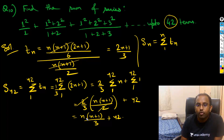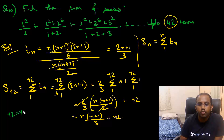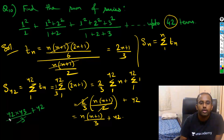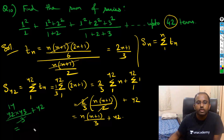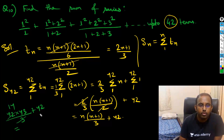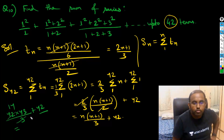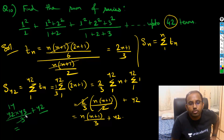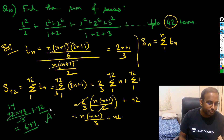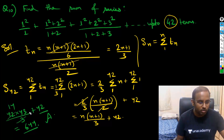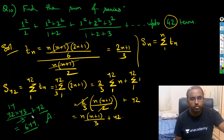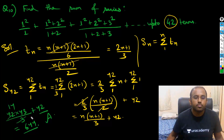Now I put n = 42: that gives 42 × 43 / 3 + 42. The 3 divides 42 to give 14, so this is 14 × 43 + 42, which is 602 + 42. Let me verify: 43 × 14 — that's 430 + 172 = 602. So 602 + 42 = 644. The answer is 644.